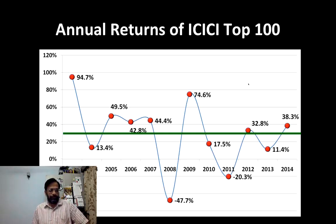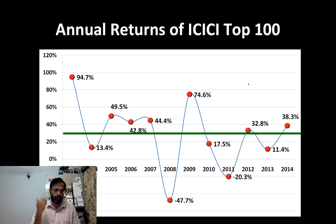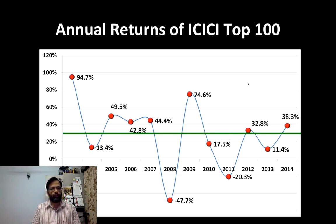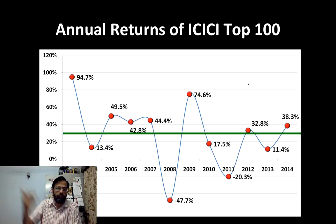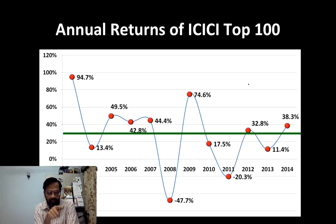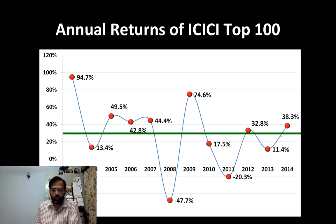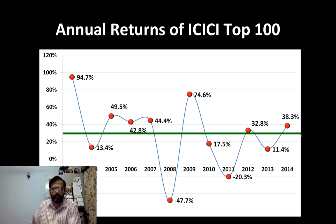This is Annual Returns of ICICI Top 100 Fund. This is a graph that I show in every one of my talks — I've also shown this in a couple of videos before. You can notice that the returns are fluctuating up and down; it's extremely volatile. Now, that green line right there is the arithmetic average of all those returns.